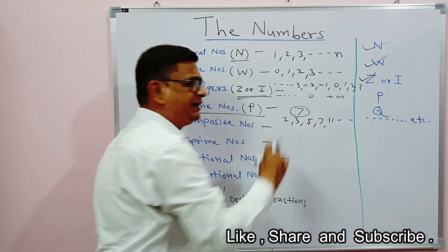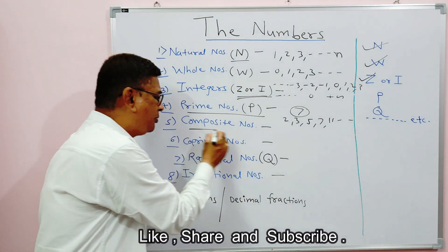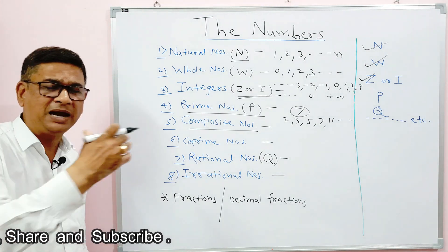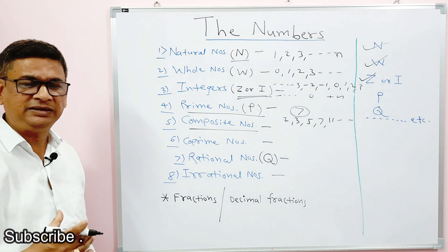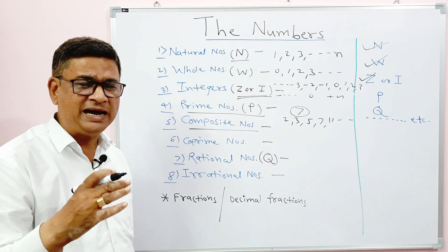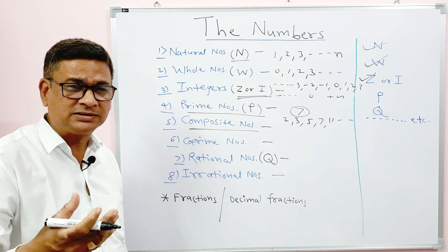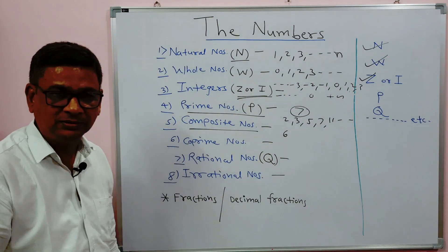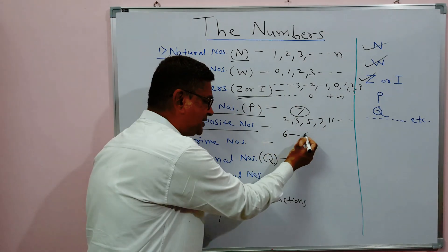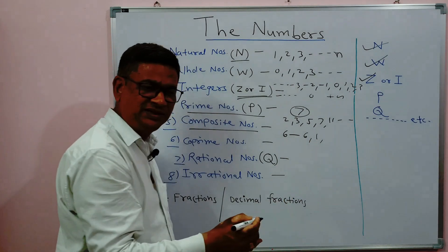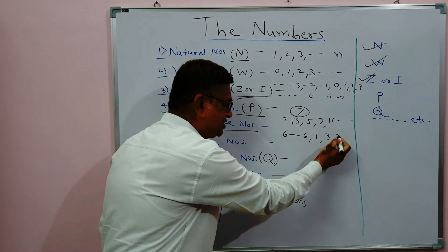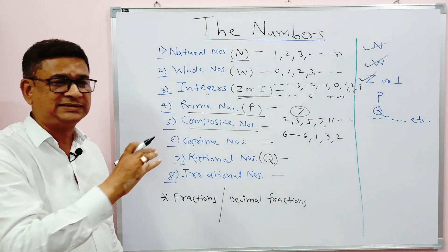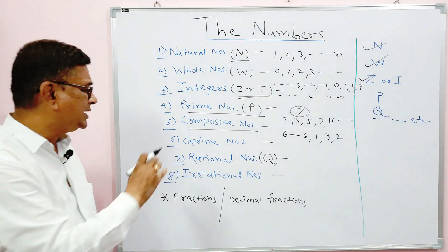Composite numbers are other than prime numbers — they can be divisible by themselves as well as having other factors. For example, 6 is a composite number: 6 is divisible by itself (6), by 1, and also by 3 and 2. So composite numbers have more factors than just themselves and 1.